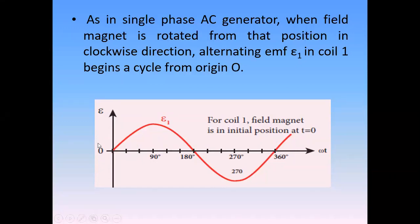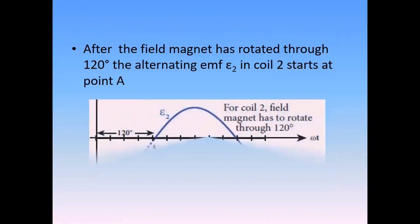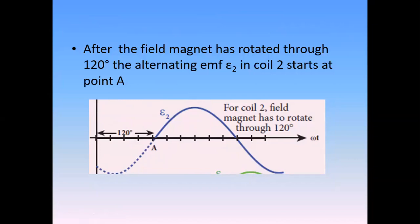So the EMF of coil one begins from the origin O. The second coil is at an angle of 120 degrees from the first coil. The EMF of the second coil will start from point A. The dotted line shows the previous cycle, and only the solid line shows the actual cycle.